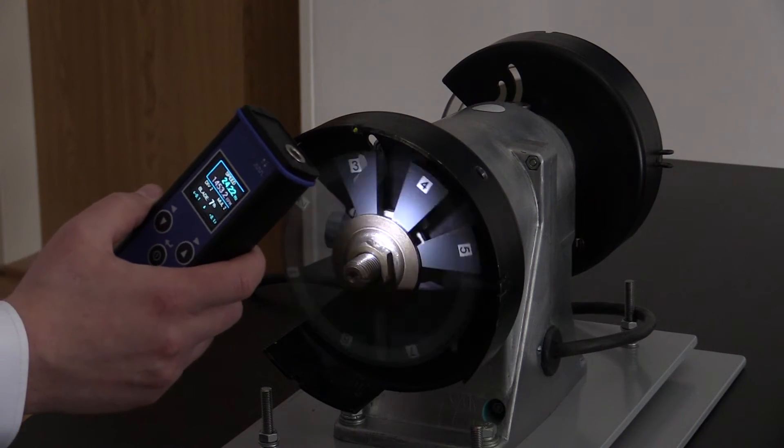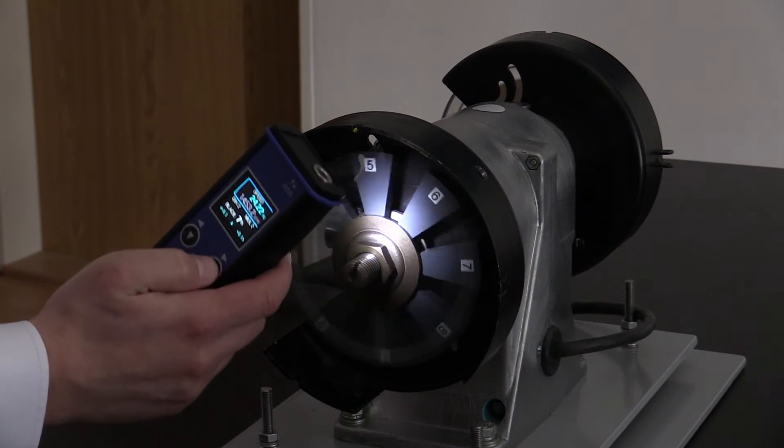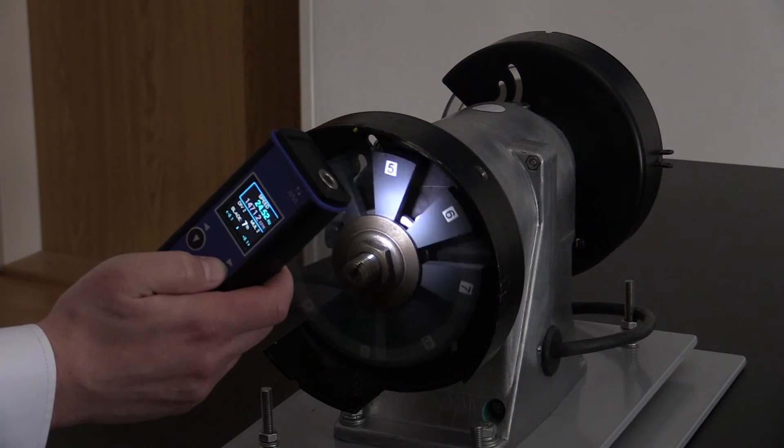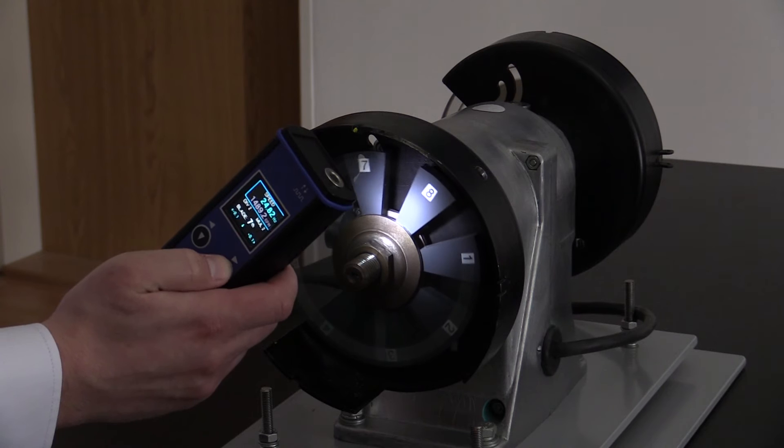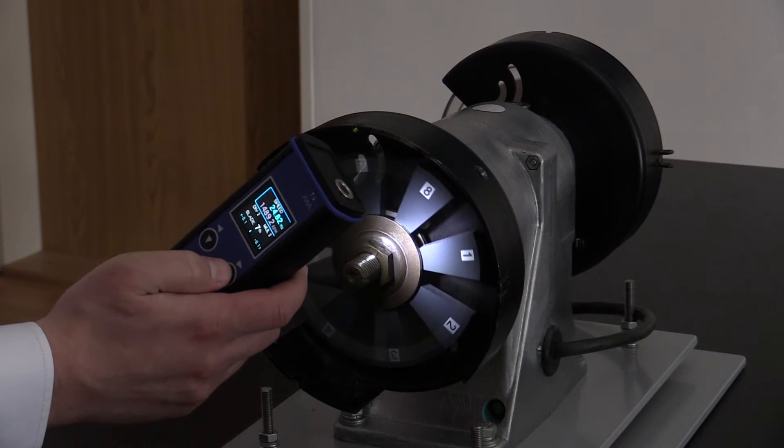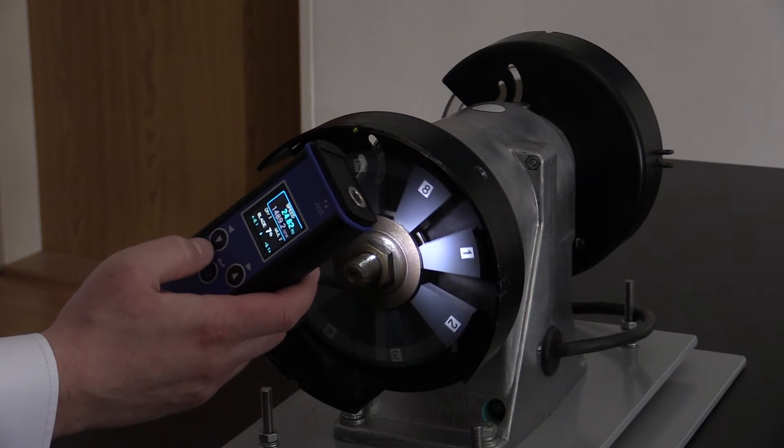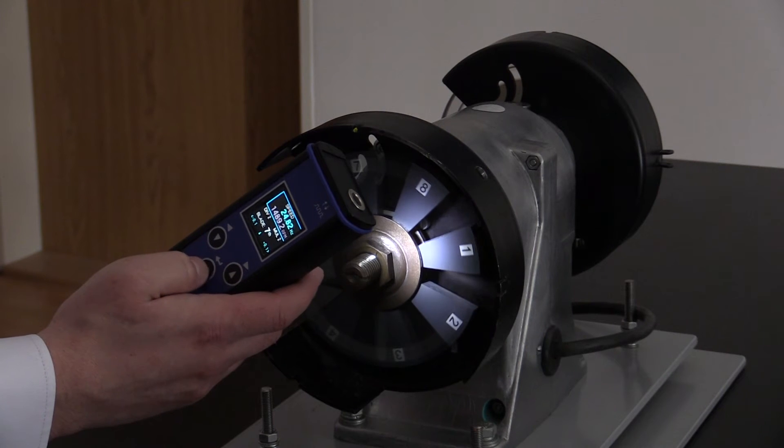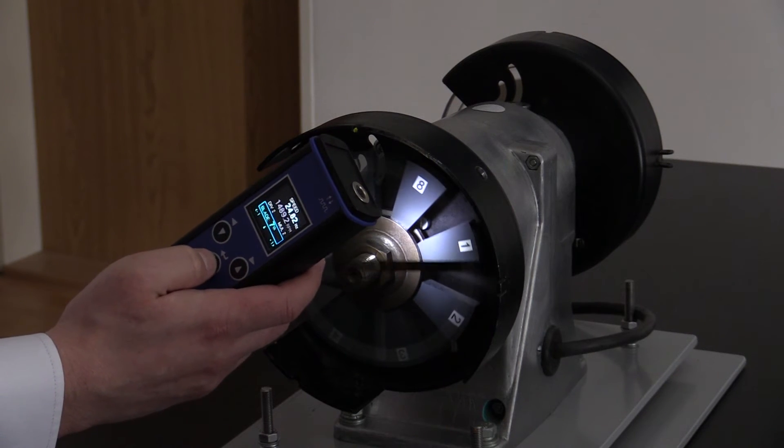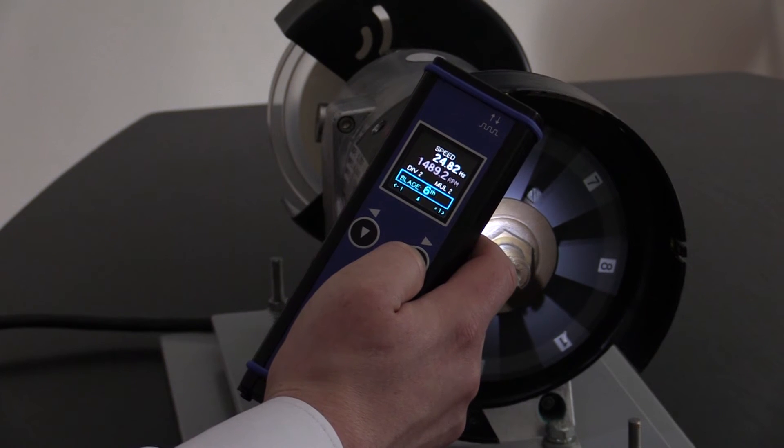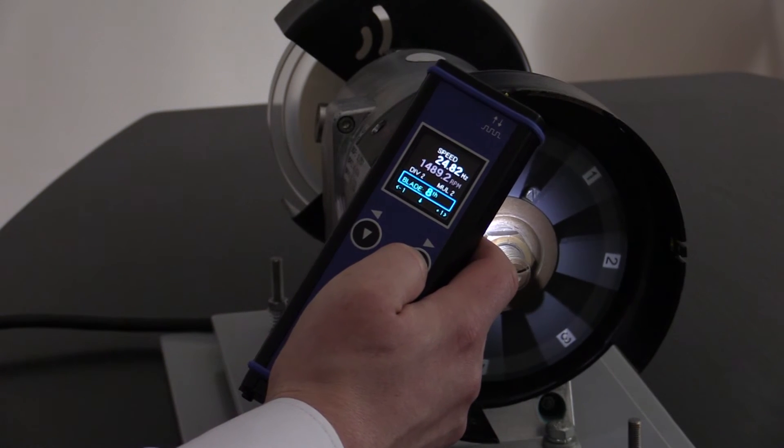Similar function to phase shift is blade shift. I will virtually stop the machine again and I know that my fan has got eight blades. So I will define eight blades into the device and then I can just shift between individual blades and check them.